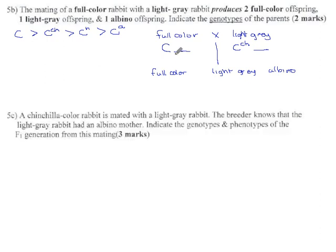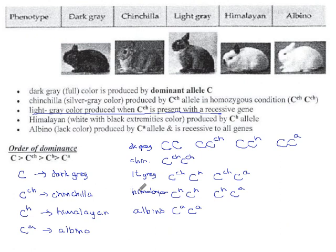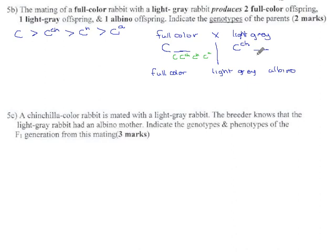I'll put underneath here, this could be C, it could be C chinchilla, it could be C Himalayan, or it could be C albino. We have no idea. For the light gray, just double checking here. It can be either the H or the A. C^h or C^a. So not good. If we were doing all these combinations, we have four possible dads times two possible moms, we'd have to do eight different Punnett squares. So hopefully it doesn't come to that.